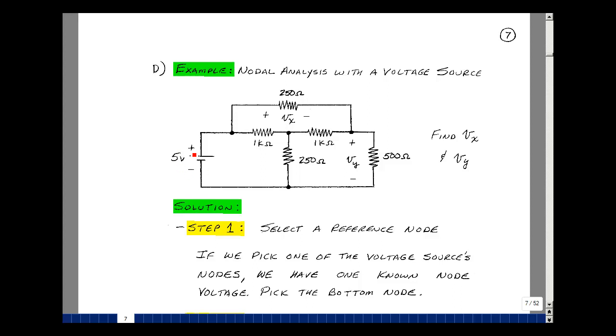With a voltage source, I know the value of the voltage, so I could pick this as a reference node or this as a reference node. But I'm also solving for V sub y. So if I were to pick this as my reference node, I would already know one of the node voltages, and there would be just two more to solve for. Let's do that. We'll pick that as a reference node.